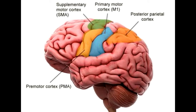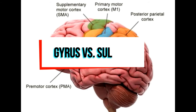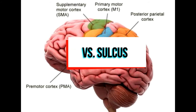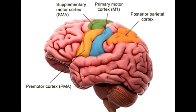Gyrus vs. Sulcus. Gyri (singular: gyrus) refer to the bumps or ridges that appear on the wrinkly, folded surface of the brain. They are essentially the peaks of the folds. In short, the hills of the brain's surface are referred to as gyri.